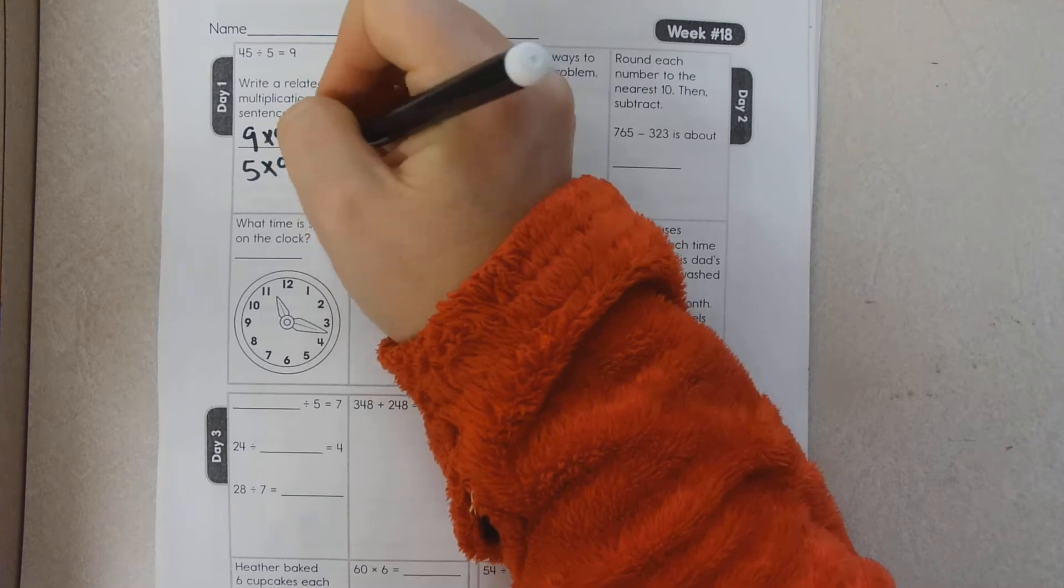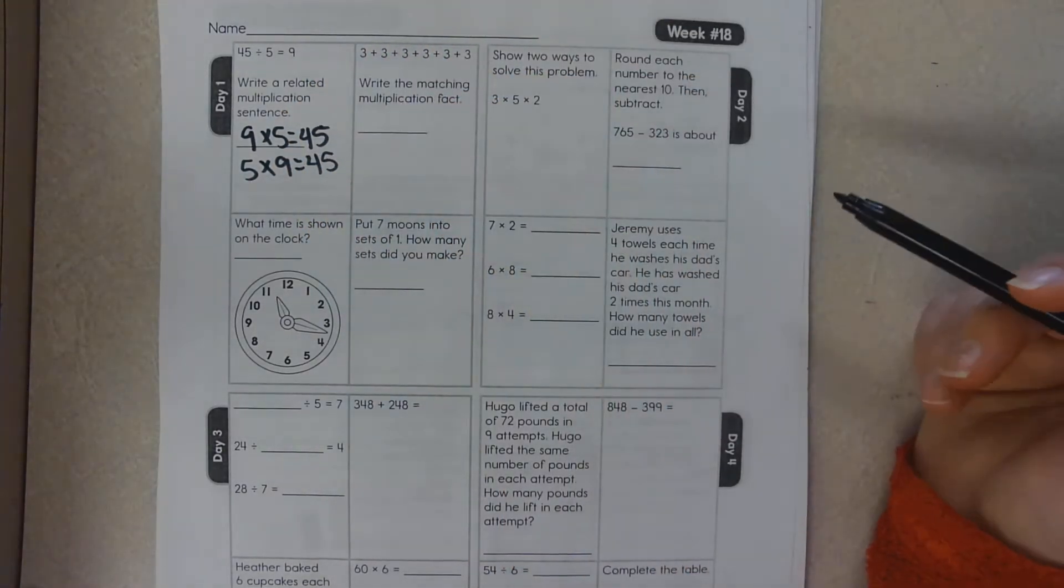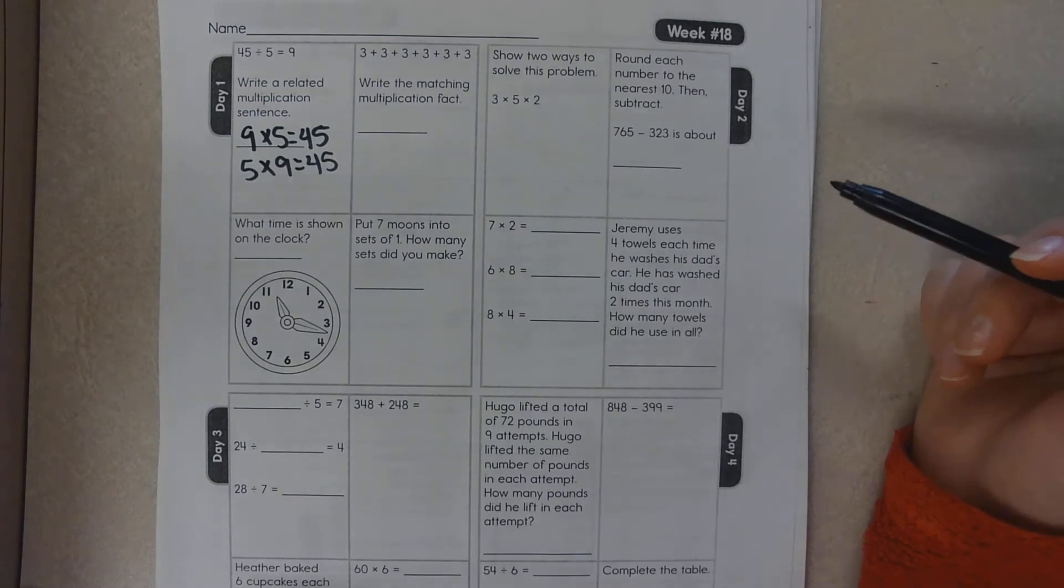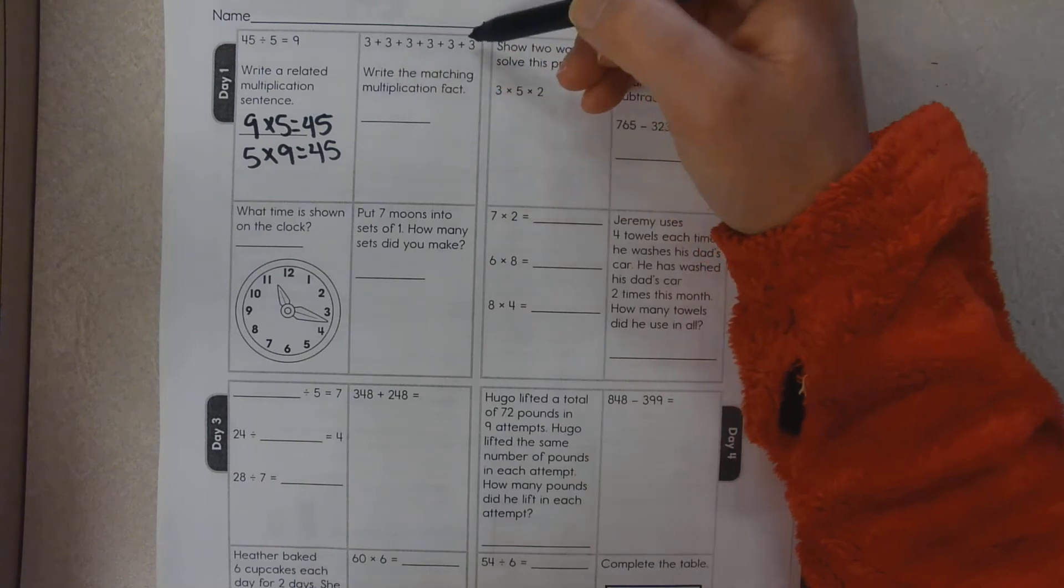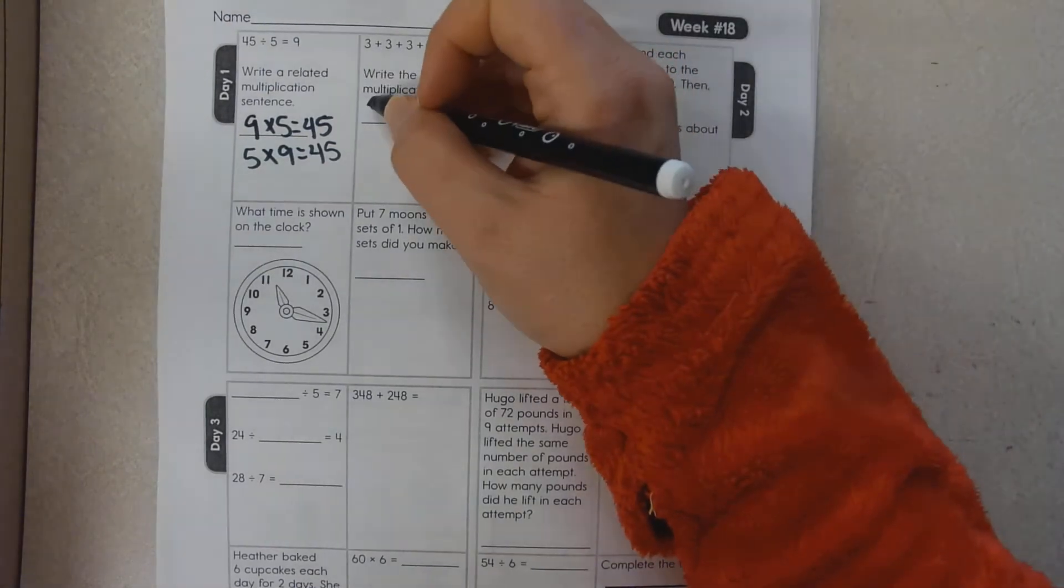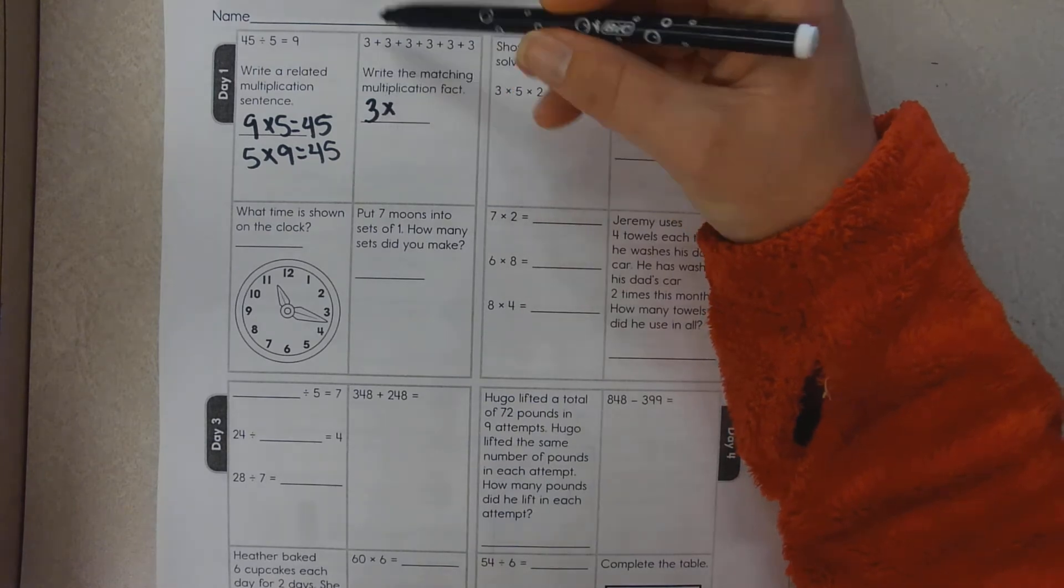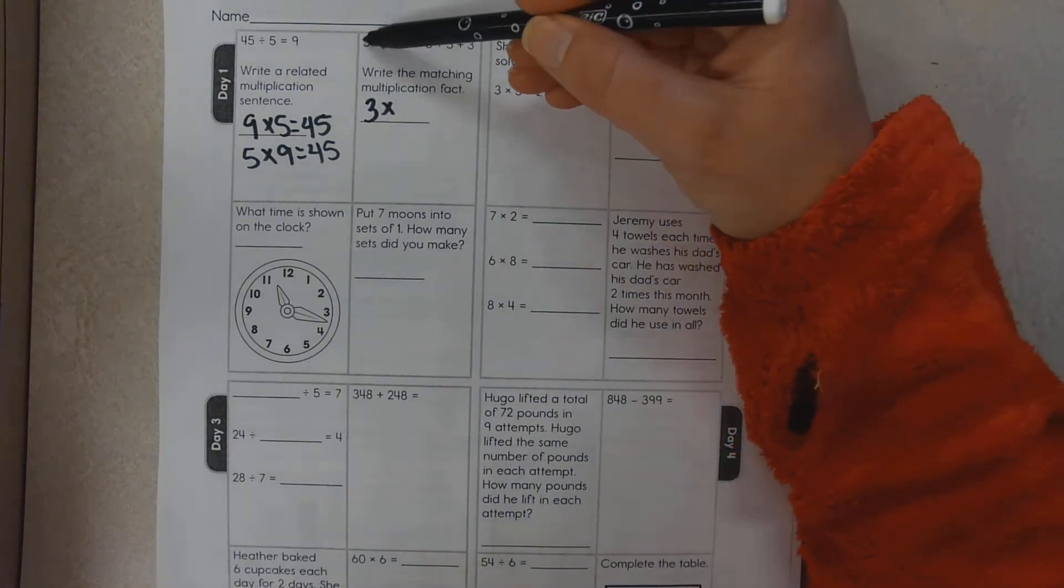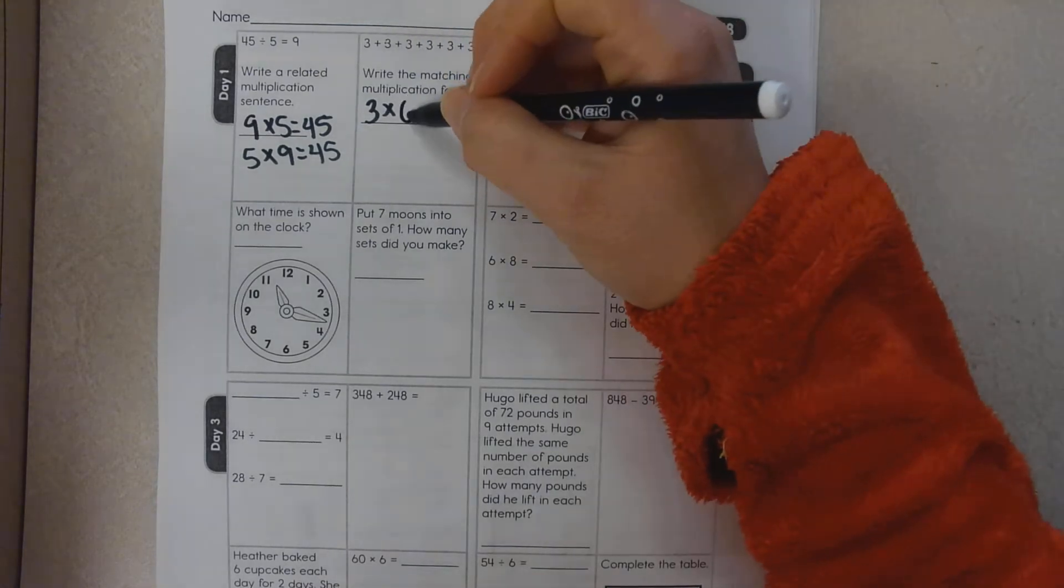And we know multiplication is repeated addition. So we are going to repeatedly add 3 how many times? 1, 2, 3, 4, 5, 6. And what is my answer? 3 times 6: 3, 6, 9, 12, 15, 18.